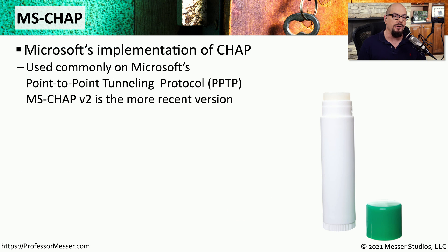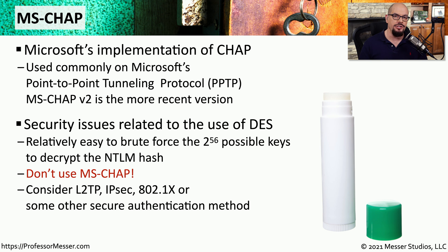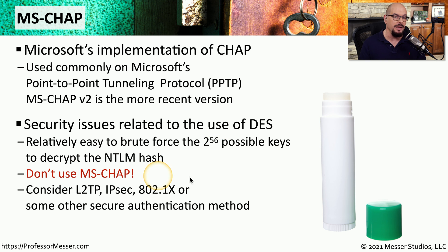There's a version of CHAP called MSCHAP, which stands for Microsoft CHAP, commonly used with Microsoft's Point-to-Point Tunneling Protocol, or PPTP. The most recent version is MSCHAP v2. Unfortunately, MSCHAP is a very old implementation — it uses the Data Encryption Standard for encryption, which is very weak and makes it easy to brute force the relatively small number of possible keys used during the connection. For that reason, MSCHAP and MSCHAP v2 are commonly no longer used.